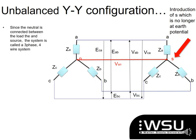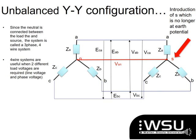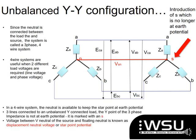Since we usually have a neutral on star connections, we call this type of system a three-phase four-wire system, because the neutral has its own wire. Four-wire systems are used when we need two different voltages — the line voltage and the phase voltage. The neutral is available to keep the star point at earth potential, and you have your three lines — A, B, and C — connected to the unbalanced Y-connected load.